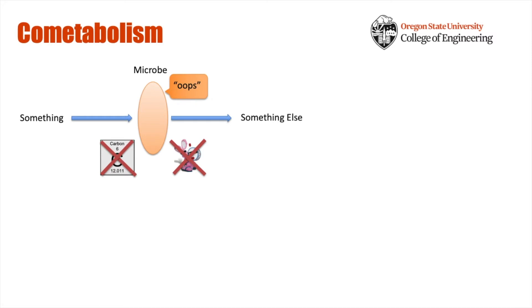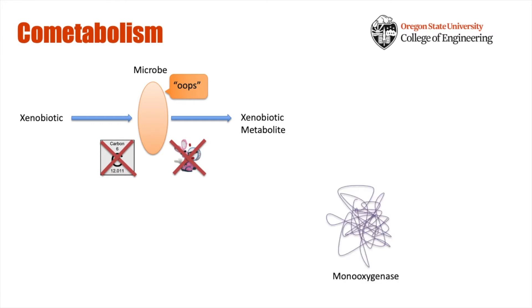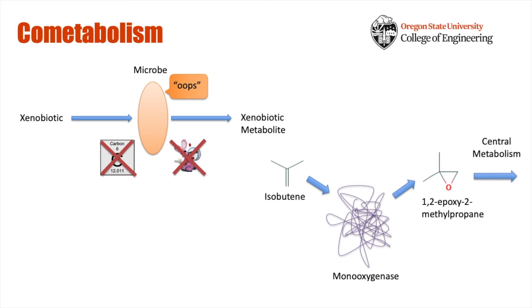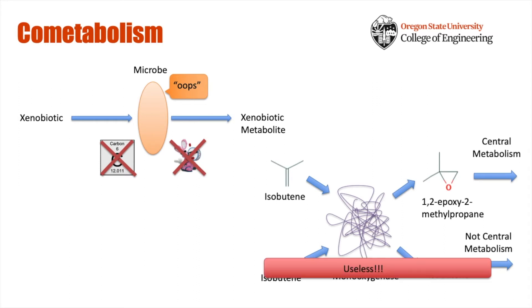Enzymes expressed by microorganisms to use their growth substrate can also sometimes degrade xenobiotic compounds present in the environment. In this case, ELW1 expresses a monooxygenase that it uses to initially oxidize its primary substrate, isobutene, to 1,2-epoxy-2-methylpropane. This epoxide is then hydrolyzed and further oxidized in ELW1's central metabolic pathway, which gives ELW1 energy to thrive and grow. In the case of co-metabolism, a compound that is not isobutene but still resembles it in some way finds its way into the active site of the monooxygenase. It's transformed by this enzyme, but the cell doesn't get anything out of this. From ELW1's perspective, this process is useless, but for environmental engineers looking to remediate contaminated soil and groundwater, this process might be very useful.